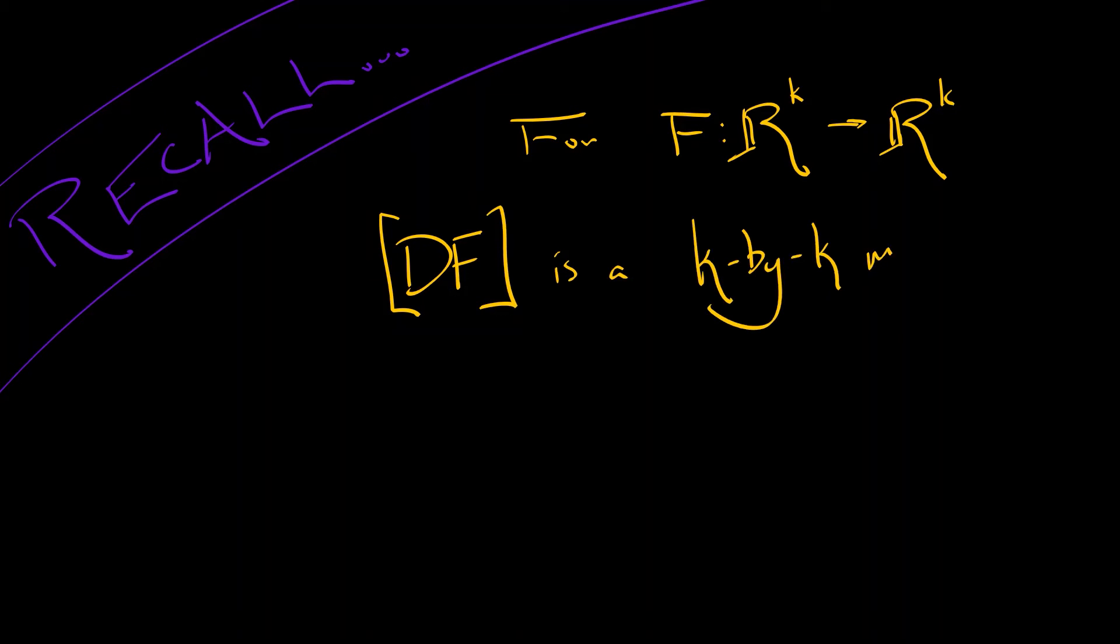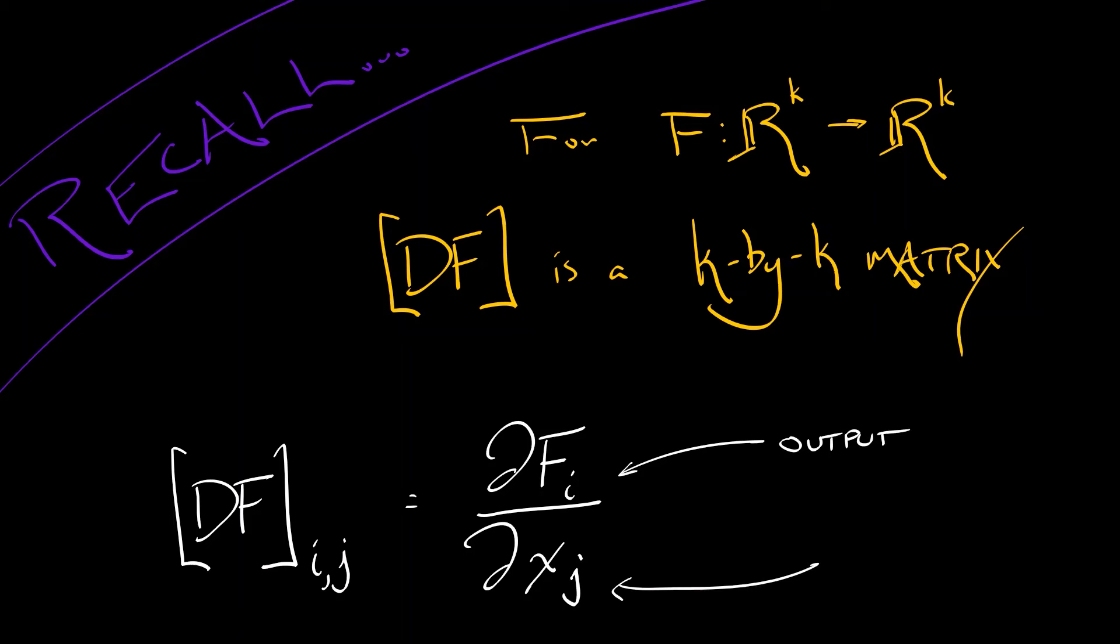So let's recall, if you have a function capital F, k inputs, k outputs, then the derivative of f, which I'm writing with those brackets around it, and the reason I'm writing it that way is because it is a linear transformation. It is interpretable as a k-by-k matrix whose entries, the i comma jth entry, is really the partial derivative of the i-th output of f with respect to the jth input xj. Now, again, depending on your calculus background, you may have called this a Jacobian.